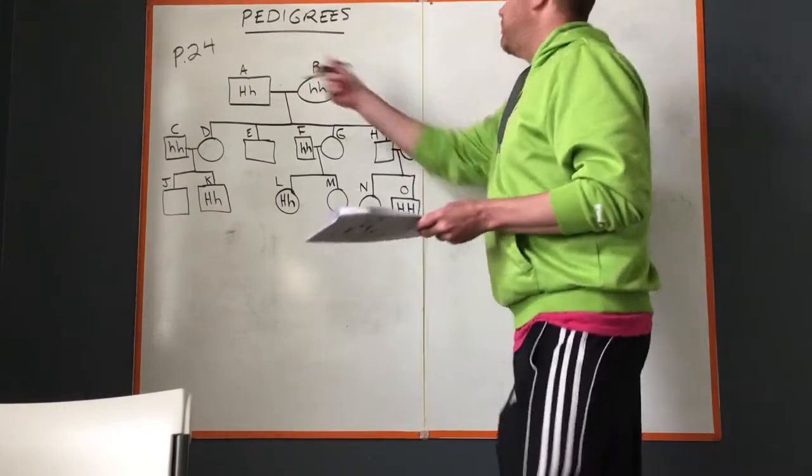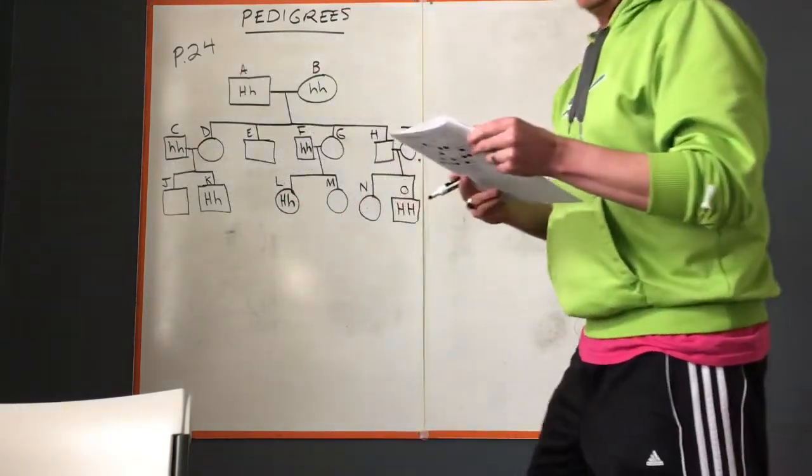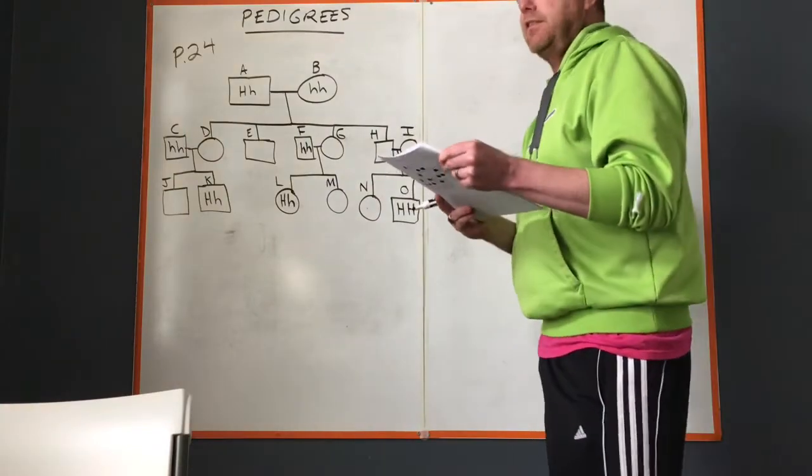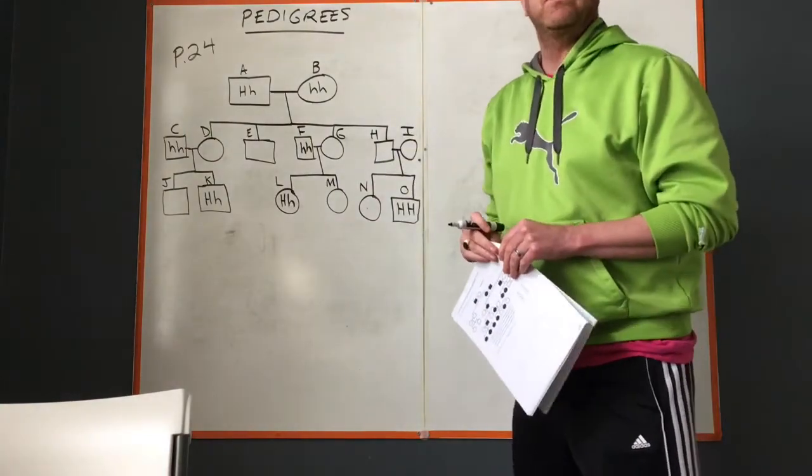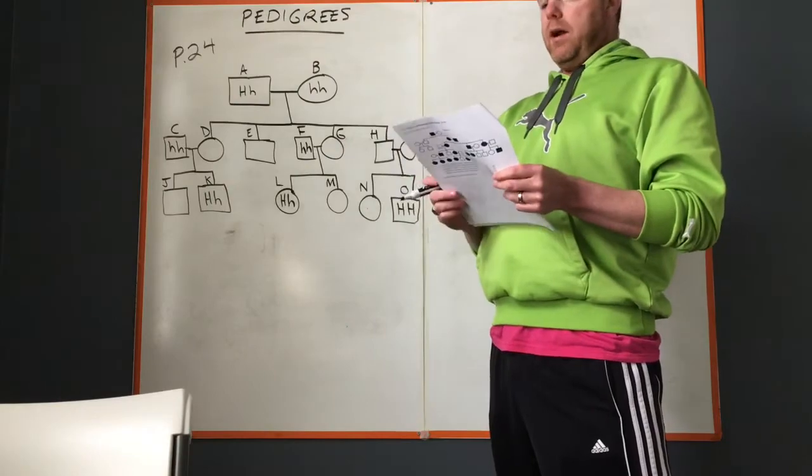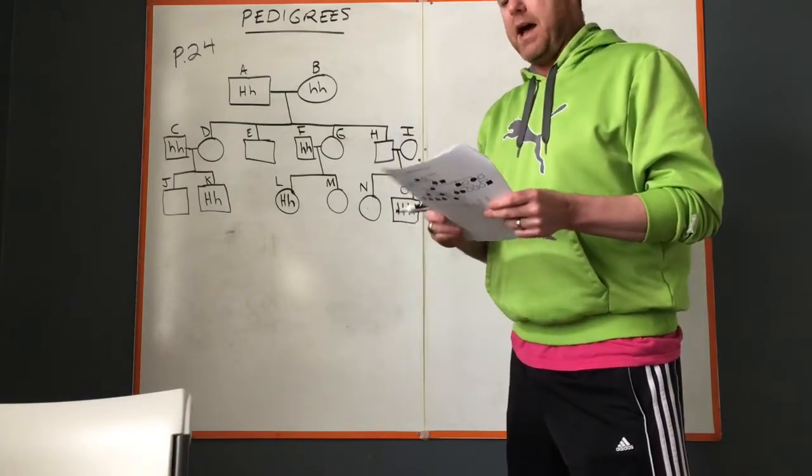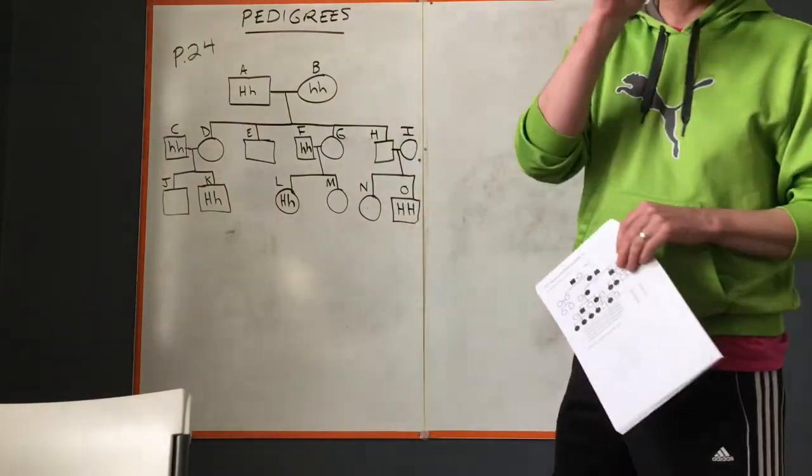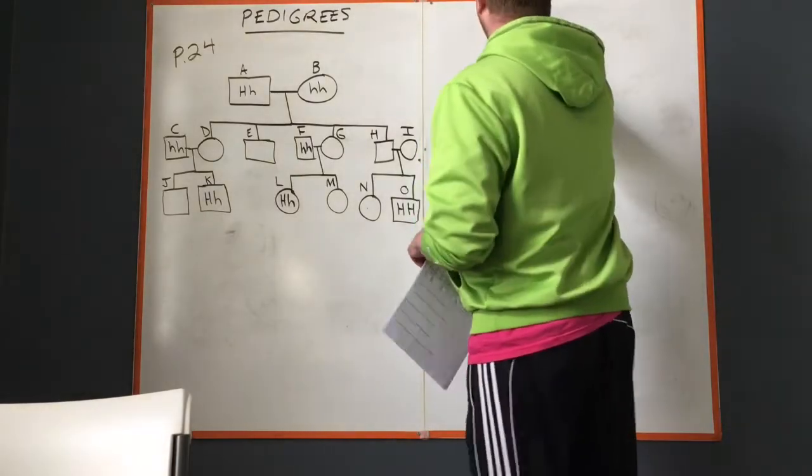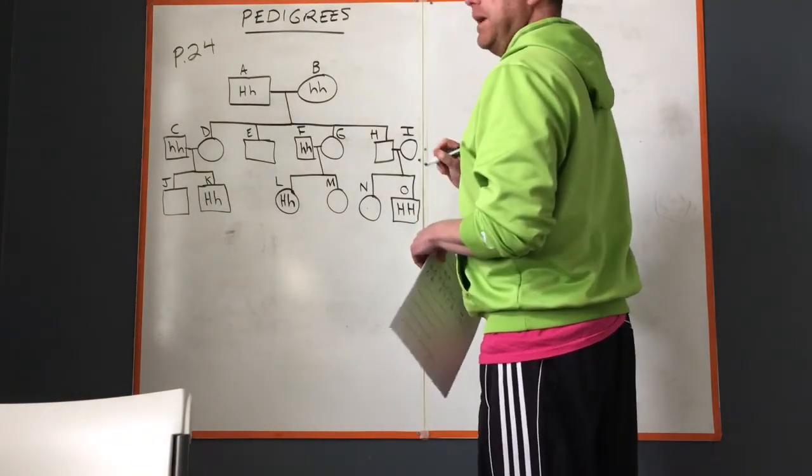This is page 24 and the pedigree involves Huntington's disease. Huntington's disease is a nervous disorder caused by an autosomal dominant gene.